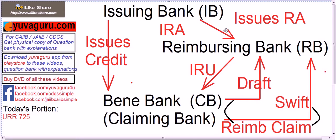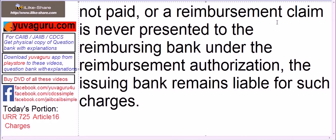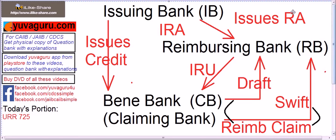For example, if the RA says to debit charges from the claim and the reimbursing bank fails to do so, that is its own mistake. Now, the second part: if a reimbursement claim is never presented to the reimbursing bank under the reimbursement authorization, the issuing bank remains liable for such charges. This can happen when the issuing bank changes the terms of reimbursement in the credit but does not inform the reimbursing bank. In such cases, any charges incurred by the reimbursing bank are to the account of the issuing bank.